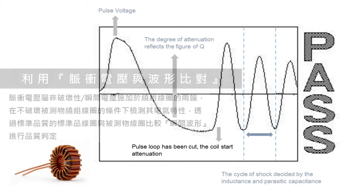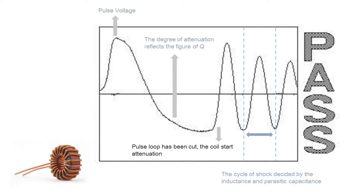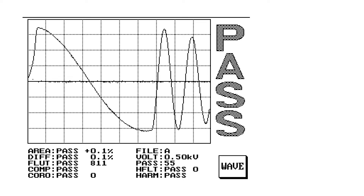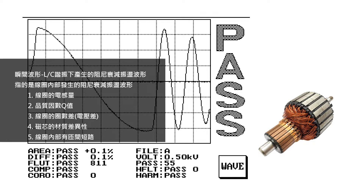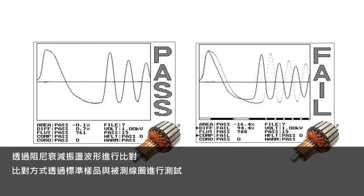Pulse Voltage and Waveform Comparison is the way Microtest 6920 detects layer shorts. The pulse voltage is a non-destructive, instant voltage applied on both sides of the winding to detect the DUT without damaging it. By comparing the waveform with the golden sample, we can judge the rotor quality.